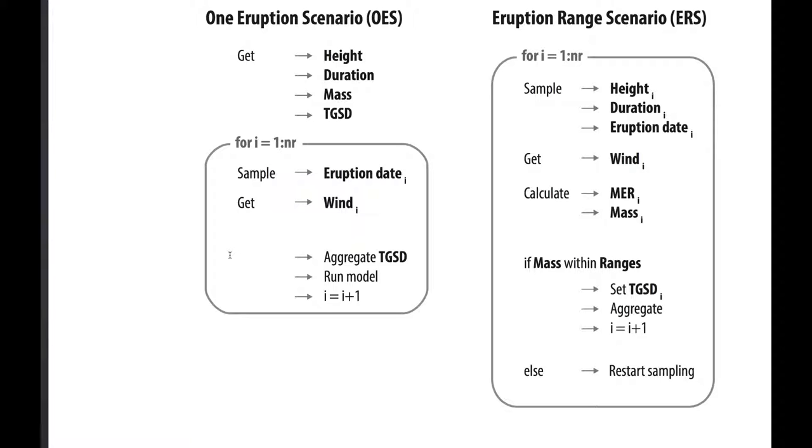If we want to also vary the eruption source parameters, we're going to sample at each of our loops. We're going to sample a height, duration, eruption date, and a mass. Which means that we need to define ranges of plume height in which the sampling will occur and ranges of duration, et cetera.